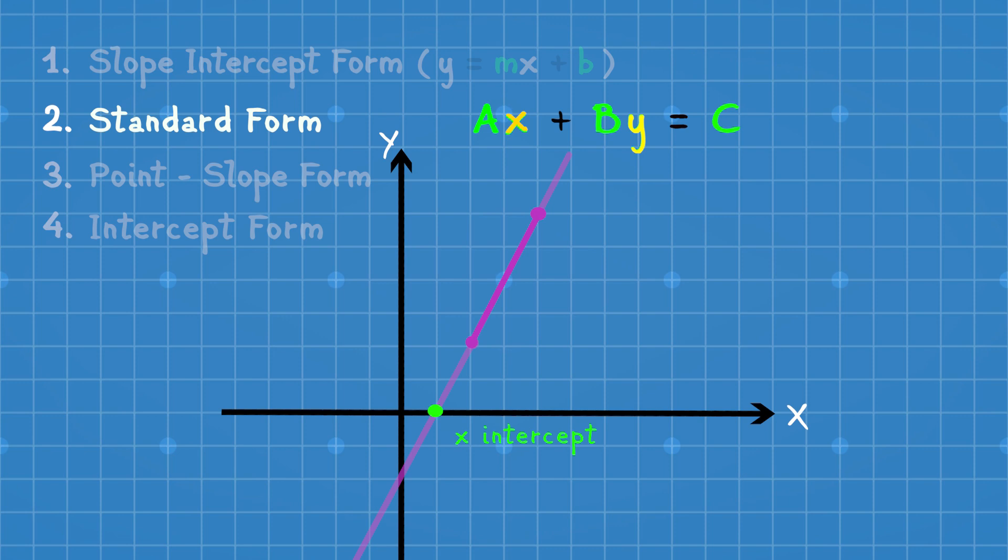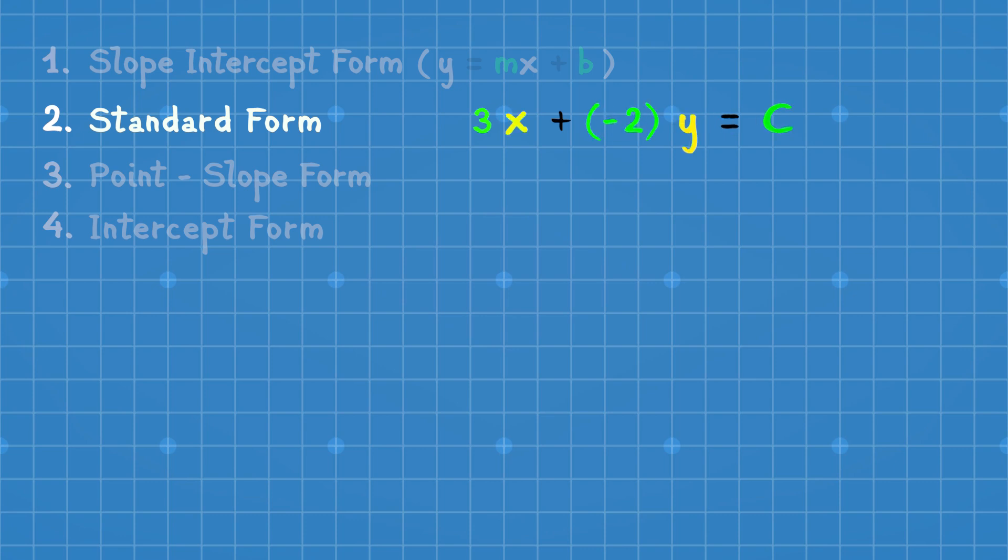To graph a line using standard form, we need to find x and y intercepts. But how to do it? Let's take a coefficient a as 3, b as minus 2, and c as 6.